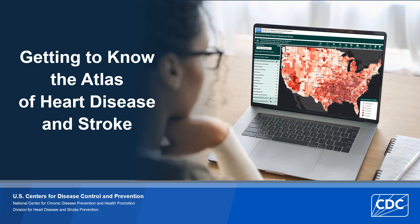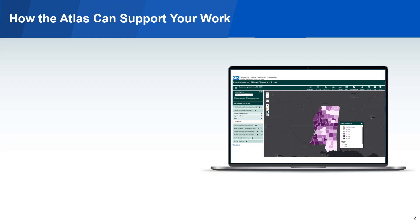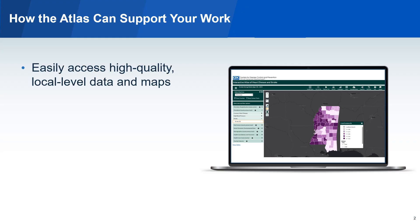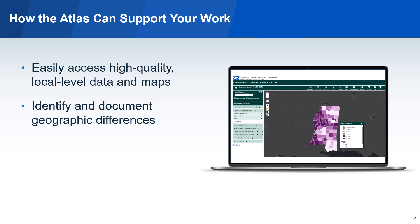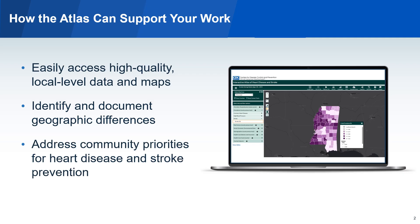Welcome to a brief introduction to the Atlas of Heart Disease and Stroke. The Atlas is a free online tool that allows you to easily access high-quality, local-level data and maps. With these maps, you can identify and document geographic differences and address community health priorities. For those who receive funding from CDC's Division for Heart Disease and Stroke Prevention, the maps in the Atlas can be used to support your work. Let's begin with the type of data that is included in the Atlas.